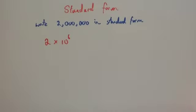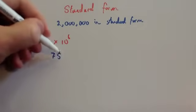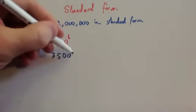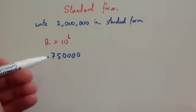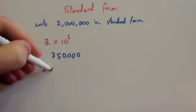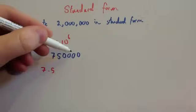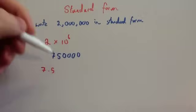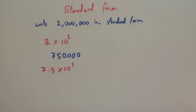Another question — let's write this number in standard form. So again, you need a number between 1 and 10 at the front, so we're going to go for 7.5. And you want to move the decimal place 1, 2, 3, 4, 5 times, so it's going to be times 10 to the power of 5.